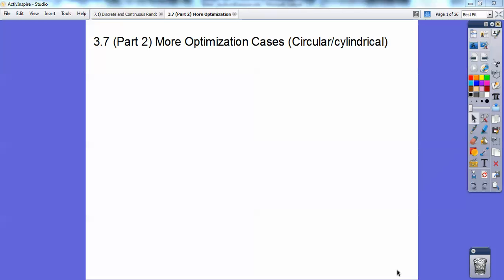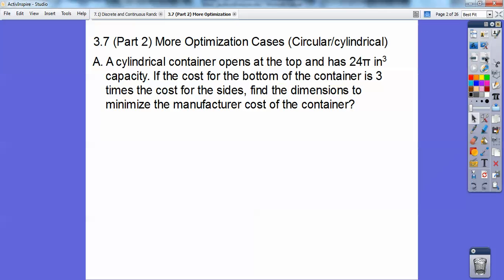This calculus lesson is part two of optimization cases. We're going to be dealing with a cylinder and it looks like a room, a rectangular room with a track going around it. Let's go ahead and deal with the cylinder here.